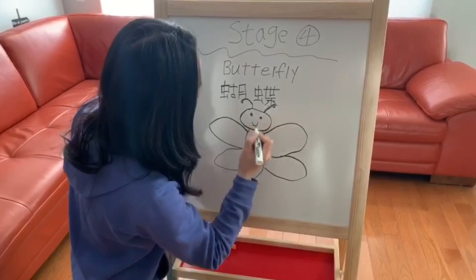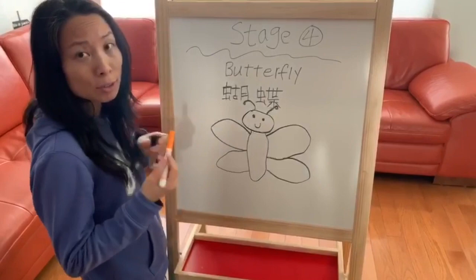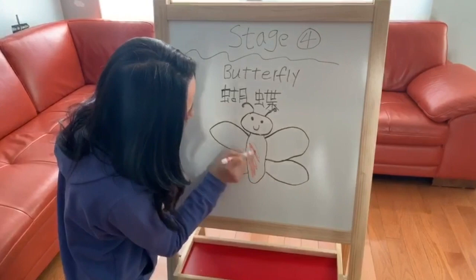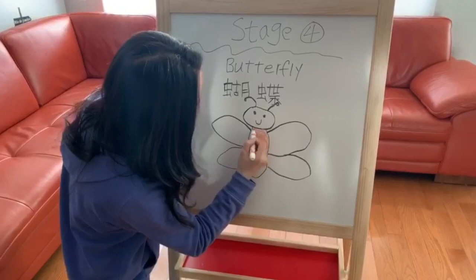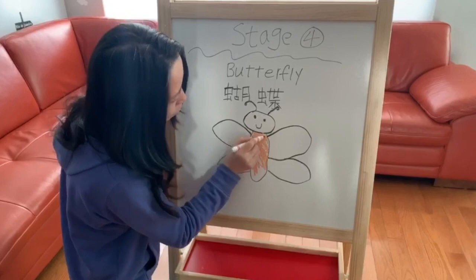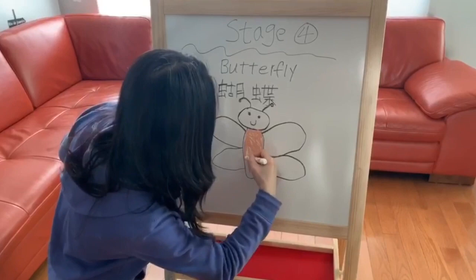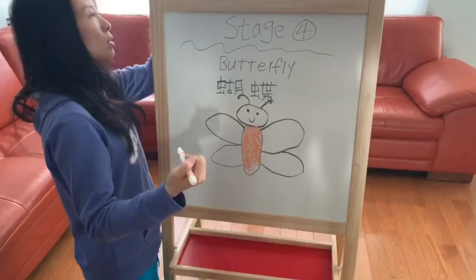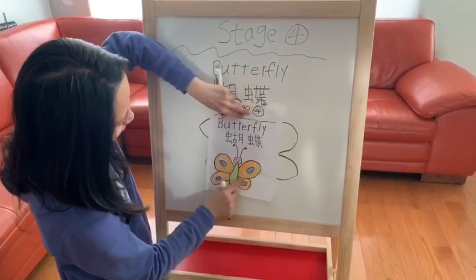After that, we need to use a crayon or marker to color the picture. And you can choose any color you want. After you finish, keep it like this. Bye bye.